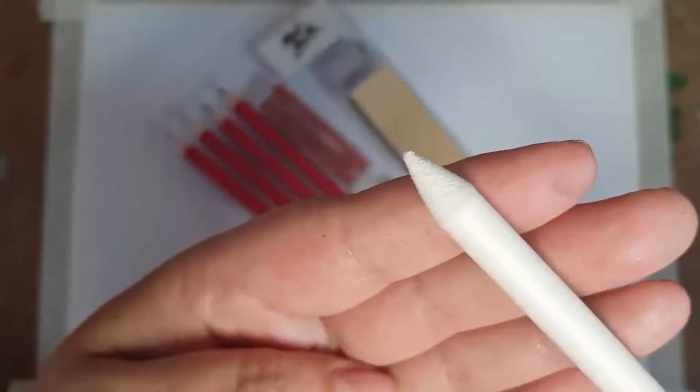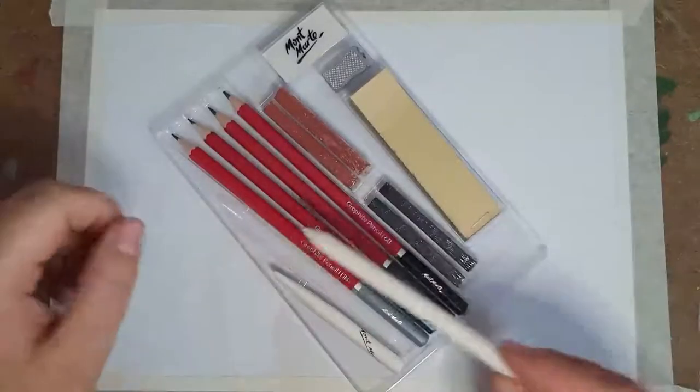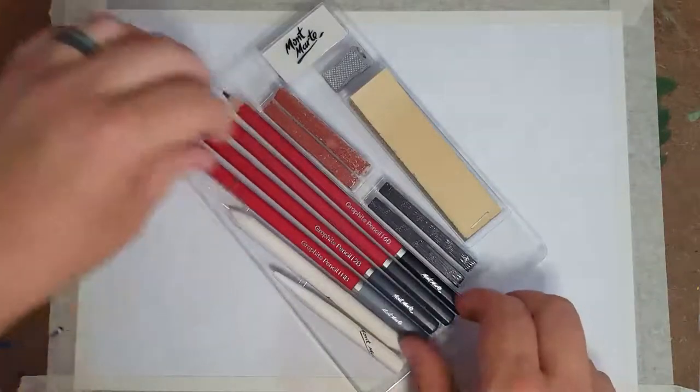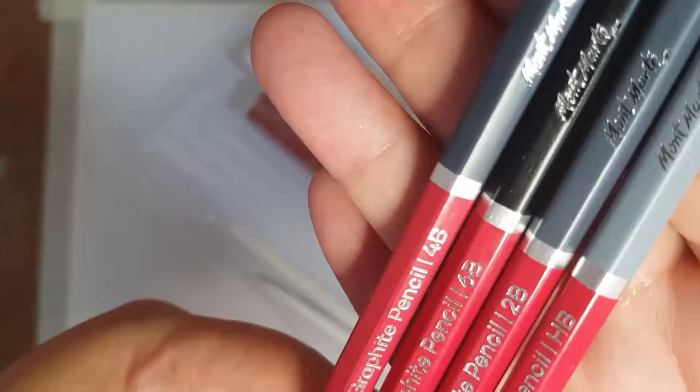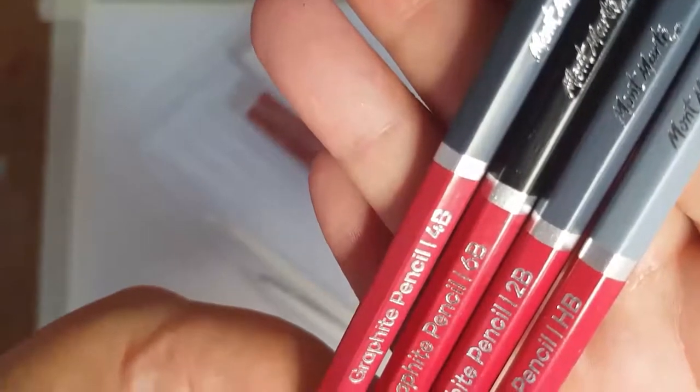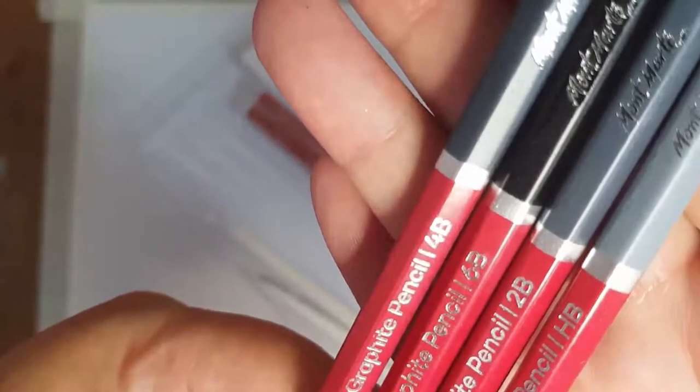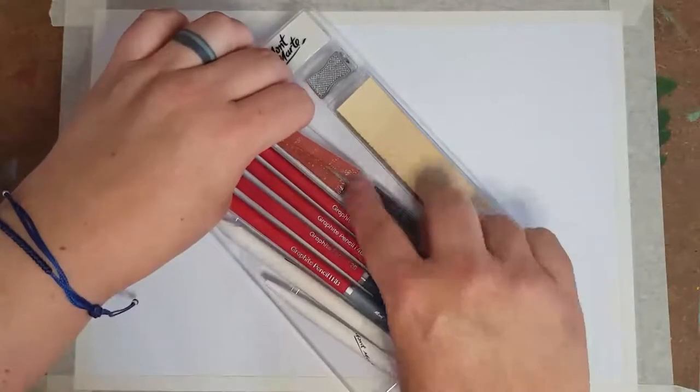First up is a light paper blending tool called a tortillion. Second up is a denser paper blending tool called a blending stump, followed by graphite pencils in various densities which I will explain shortly. This set only has four but other sets may have more.